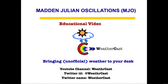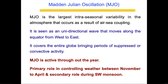Hello friends, welcome to Weathercast. Today I am going to talk about Madden-Julian Oscillation, or MJO. In very layman terms, MJO is the largest intraseasonal variability in the atmosphere that occurs as a result of the air-sea coupling.